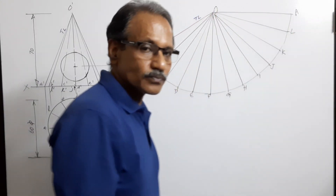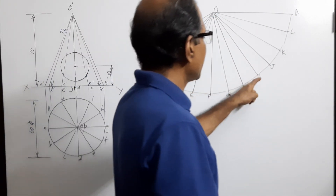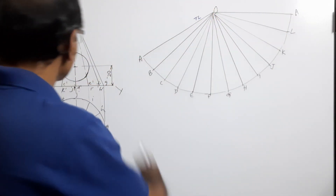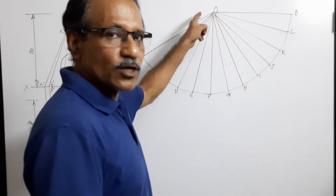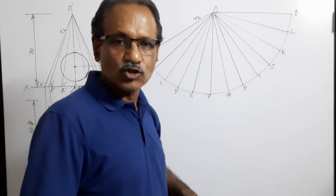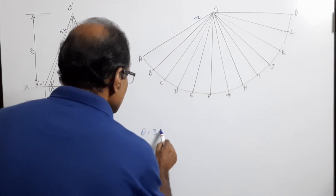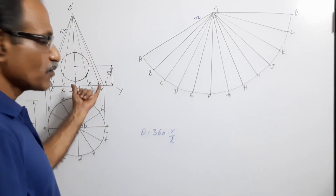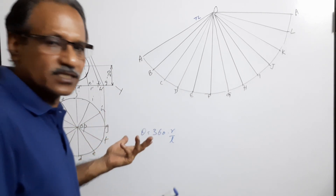Mark these points b, c, d, e, f, g, h, i, j, k, l, a and join the radial lines — these are the generators reproduced on the development. The angle theta can also be calculated as theta equals 360 times r divided by l, where r is the base radius and l is the true length of the generator, but placing the chord 12 times makes that calculation unnecessary.